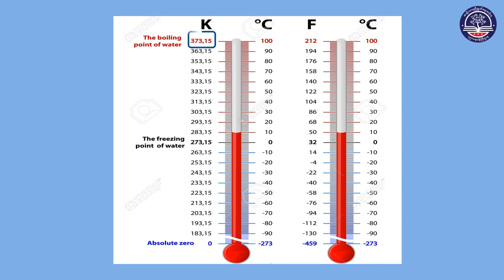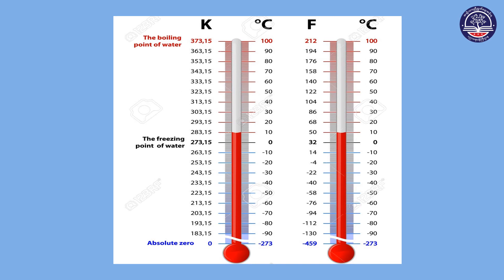100 degrees Celsius on the Fahrenheit scale is 212 degrees Fahrenheit. If you want to convert Celsius to Fahrenheit scale, you can apply the formula.